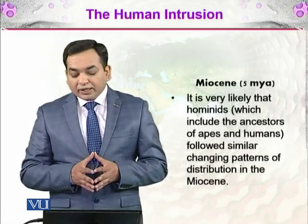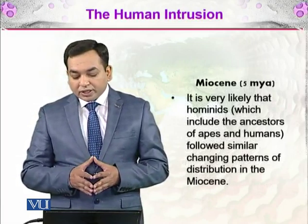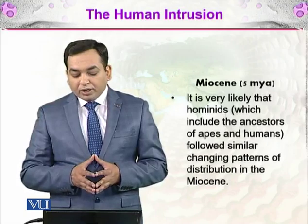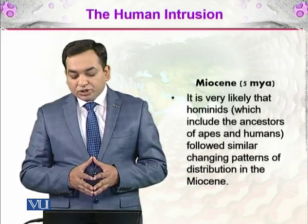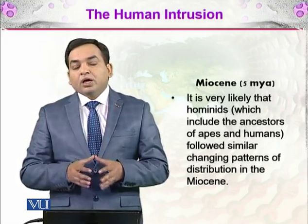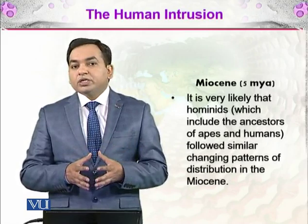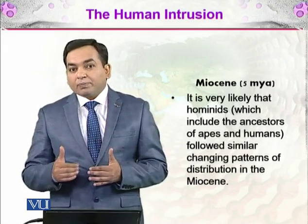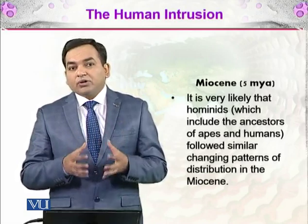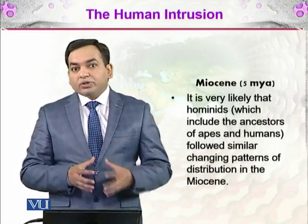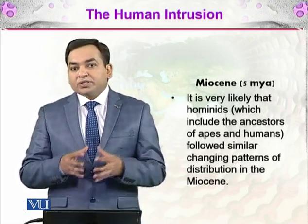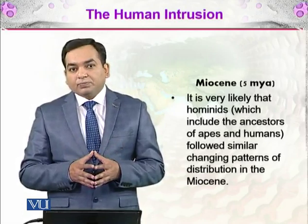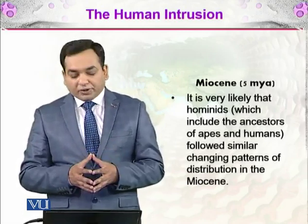It is very likely that hominids, which include the ancestors of apes and humans, followed similar changing patterns of distribution in the Miocene. We don't have their fossil record in those particular places, but we can speculate that they followed the same trends as mammoths, elephants, and hyenas in terms of distribution patterns.